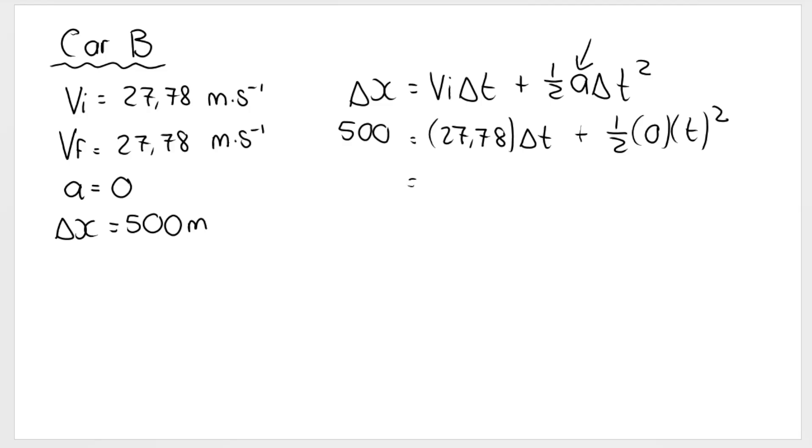If we work that out, this term will go to zero because we're multiplying by zero. So this is going to be zero. And over here, we're going to have 500 equals 27.78 multiplied by Δt. So Δt will be equal to 500 divided by 27.78 because the opposite of multiply, which this is what's happening over here, we're multiplying, is divide.